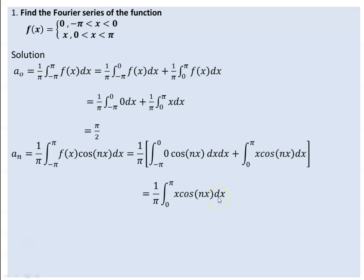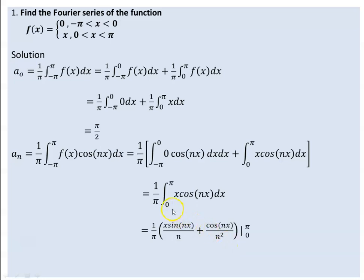We use integration by parts to evaluate this. The equation is divided into expressions. The evaluation is done using integration by parts. We find that 1 over n pi gives zero for the first part.